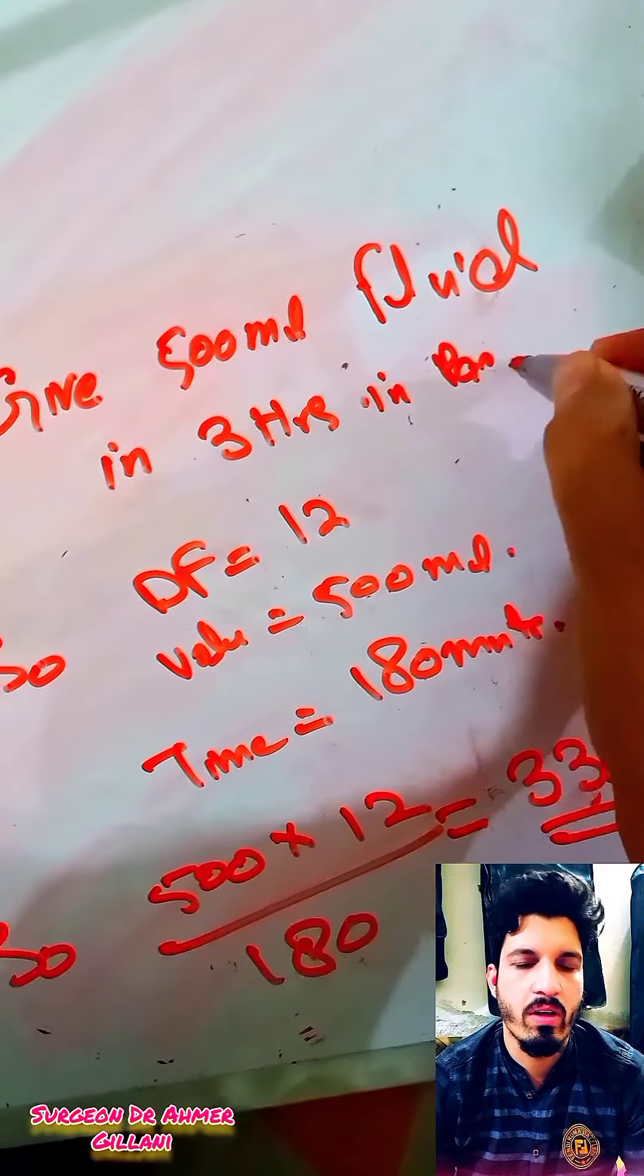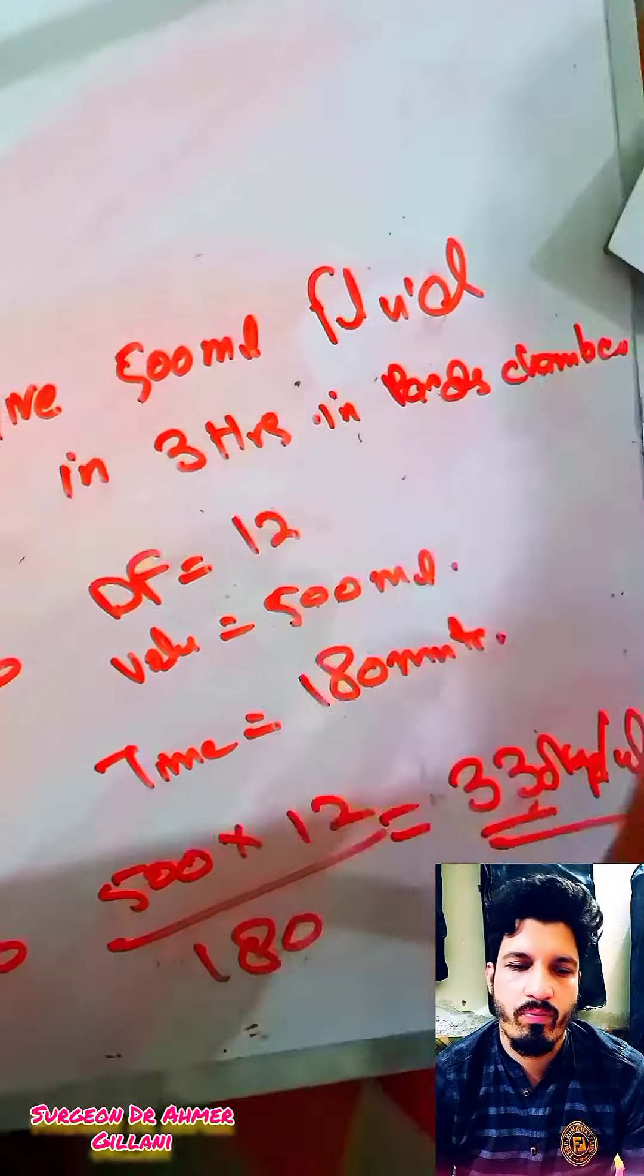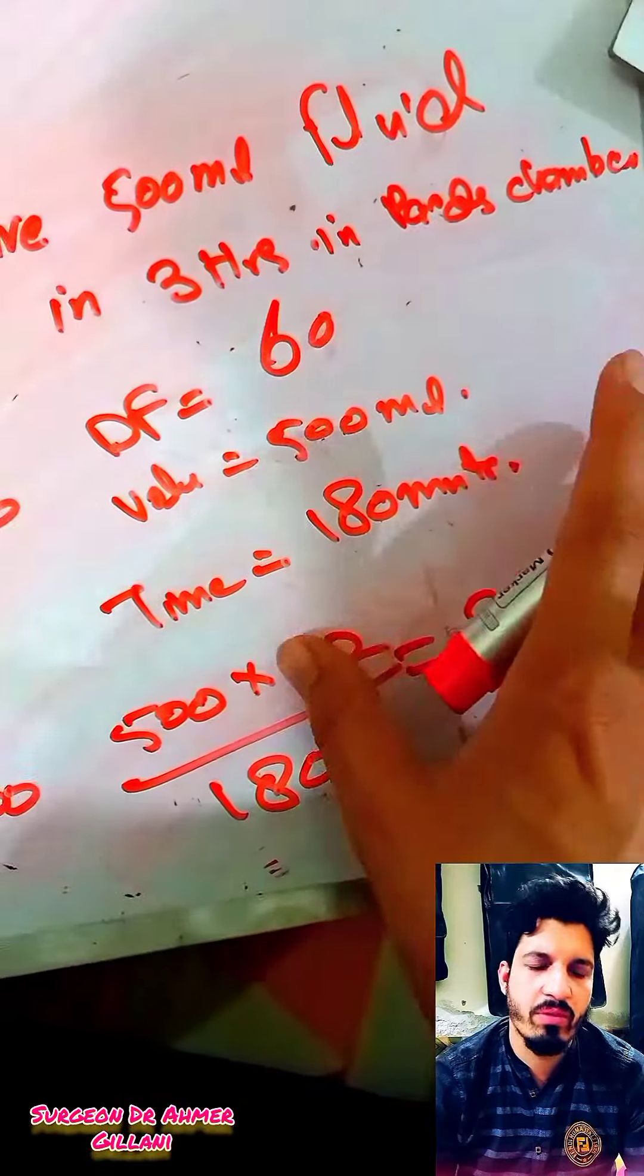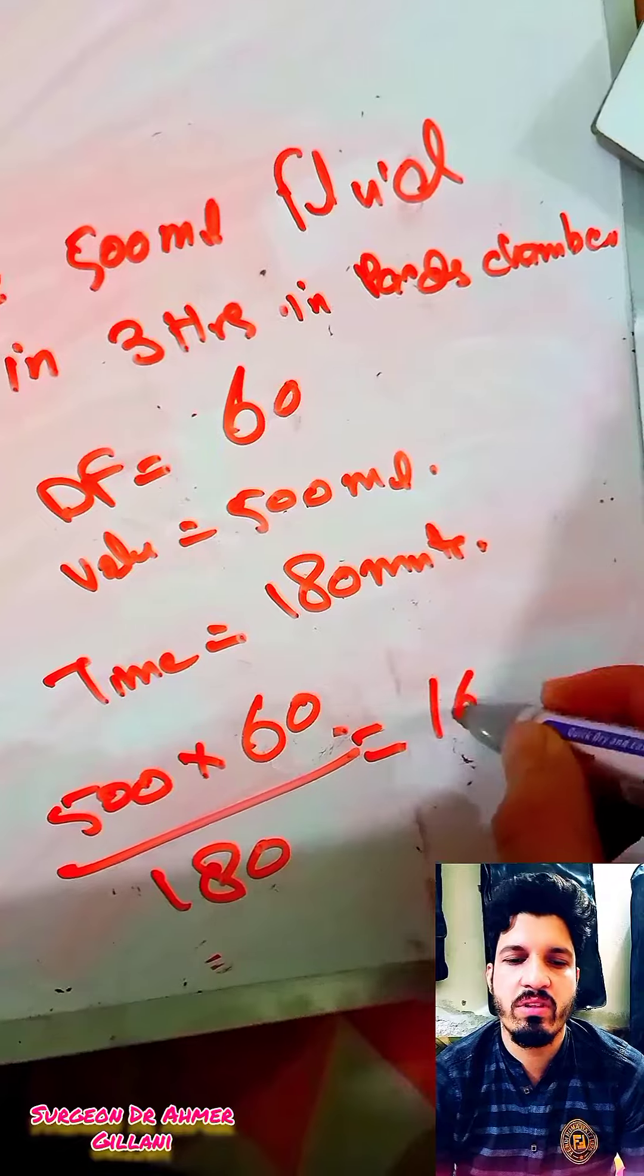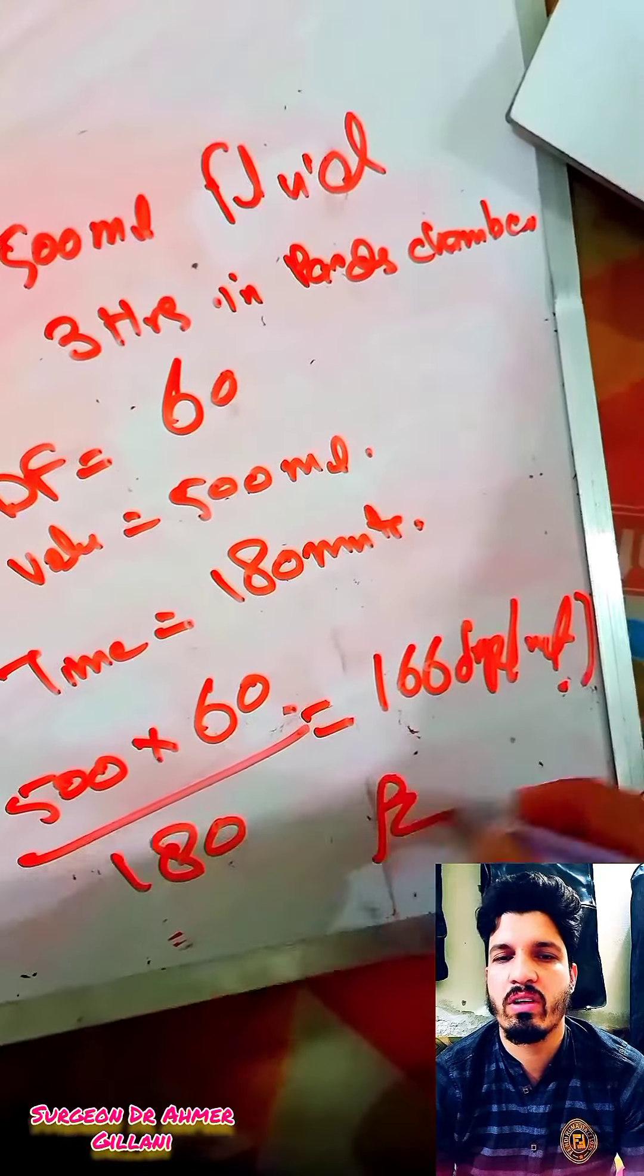So if you have got a scenario that give 500 ml fluid in three hours in the buret solution, so drop factor will be changed to 60 and you will put the values and it will come.